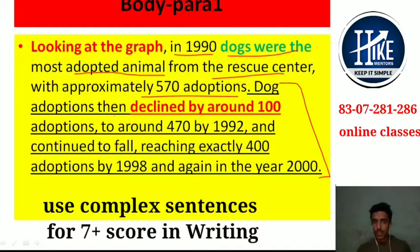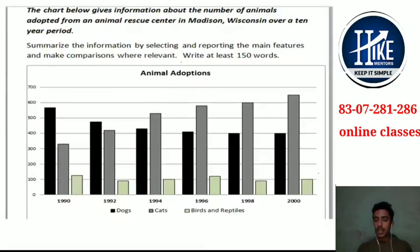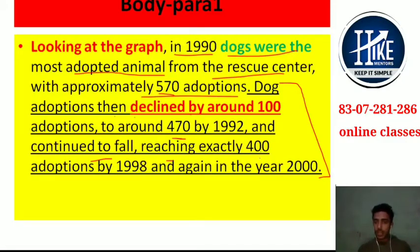For dog adoptions: there was a decline of around 100, meaning from 570 it declined to 470 by 1992. After that, you can see exactly 400 adoptions by 1998. And again in the year 2000, for the last two years, the figure remained the same — so we have simply shown it as 'continued to fall.' We have shown the trend language. You can take a screenshot and make your notes. The data might change, but the sentence structures you will find remain simple and applicable.